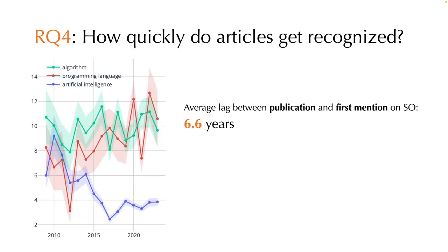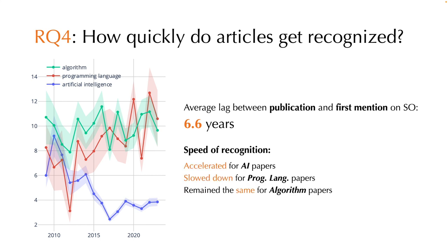Finally, we explored how quickly various Stack Overflow communities integrate academic research. Our results reveal that the average time lag between publication and its first mention on Stack Overflow is 6.6 years. The speed of recognition has accelerated over the years for AI papers, but remained roughly the same for algorithm papers and even slowed down for programming language papers, suggesting that earlier foundational works in these two areas might hold more relevance in Stack Overflow discussions.